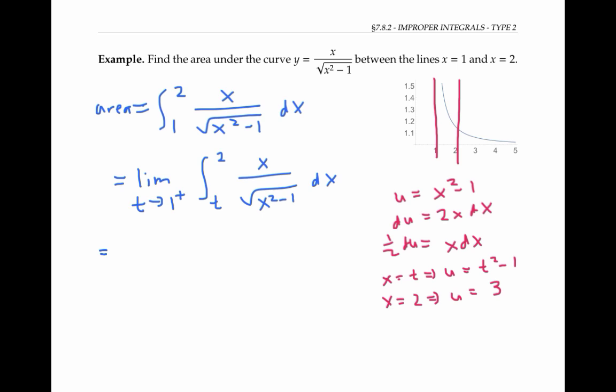So I'll rewrite my integral. x dx is the same thing as one half du, and my square root of x squared minus one becomes a square root of u in the denominator. I'll rewrite again by pulling the one half out of the integral and rewriting the square root of u in the denominator as u to the negative one half.